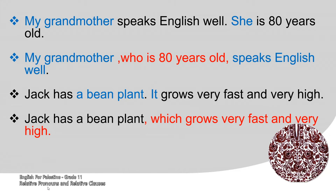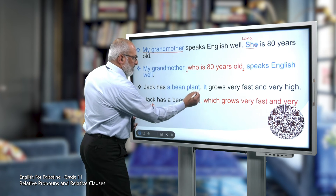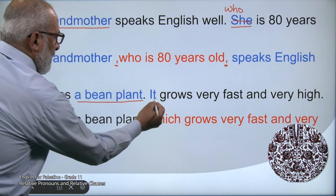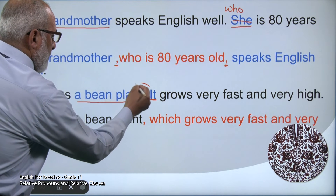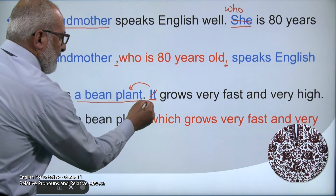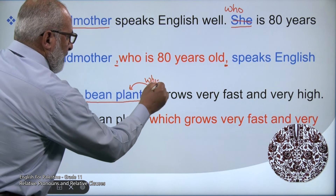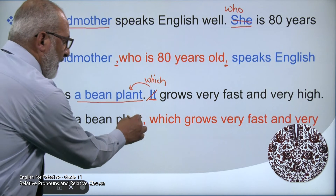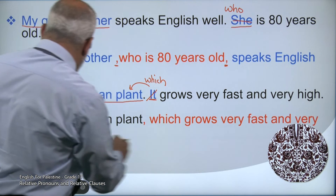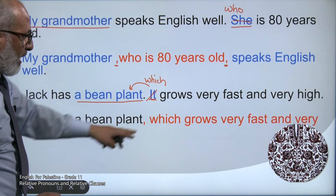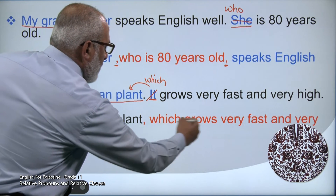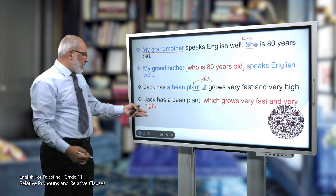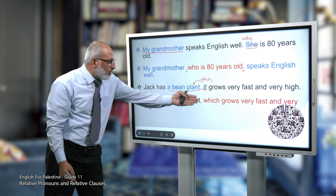Second example: 'Jack has a plant. It grows very fast and very high.' Here 'it' refers to the plant. We omit 'it' and put 'which.' It becomes: 'Jack has a plant, which grows very fast and very high.' We put a comma because this information is extra — not essential to identifying the plant.